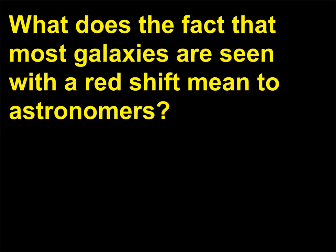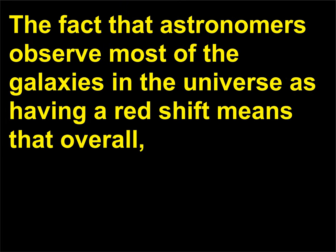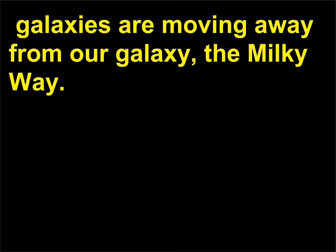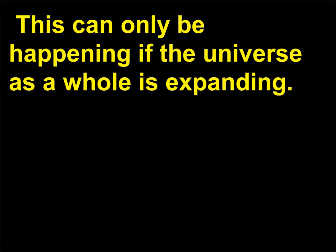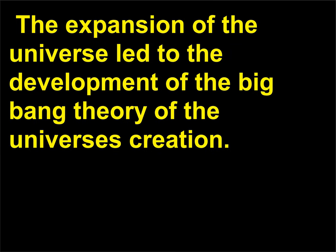What does the fact that most galaxies are seen with a red shift mean to astronomers? The fact that astronomers observe most of the galaxies in the universe as having a red shift means that overall galaxies are moving away from our galaxy, the Milky Way. This can only be happening if the universe as a whole is expanding. The expansion of the universe led to the development of the Big Bang theory of the universe's creation.